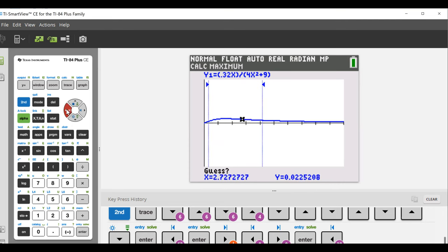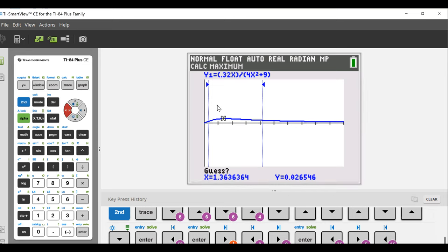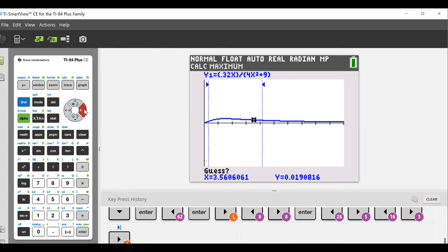And theoretically, so you scroll around, the closer you can get to the actual maximum, the better. The faster your calculator is going to go. In practice, this guess does not matter at all. We just need to select a value between our bounds. Let's use this value as our guess. We press enter.